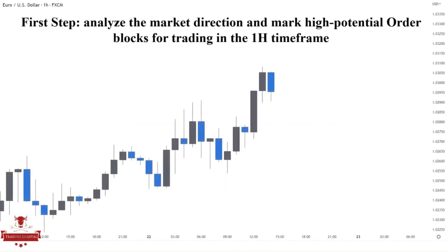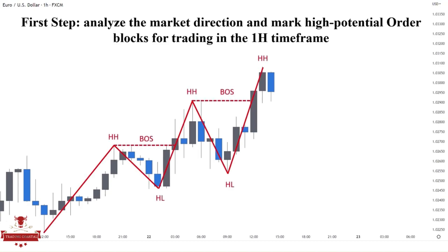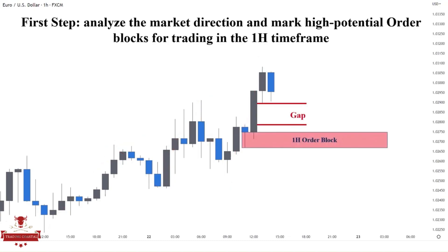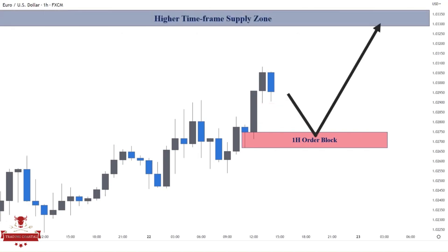This strategy has two steps. In the first step, I analyzed the market direction and marked high potential order blocks for trading on the one-hour timeframe. For example, here we can clearly see that demand is in control. The market has broken the structure to the upside with inefficiency, leaving a perfect order block demand zone behind. Also, we have enough room for the price to go higher before reaching the higher timeframe supply zone.